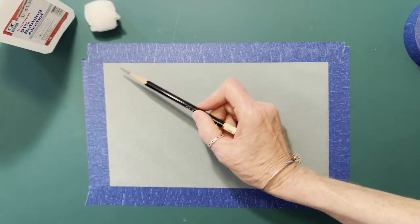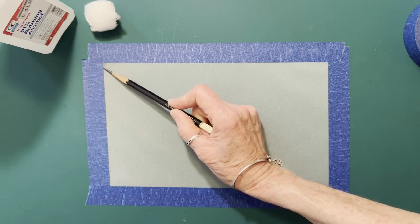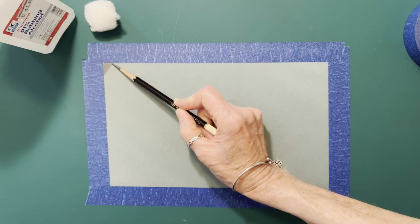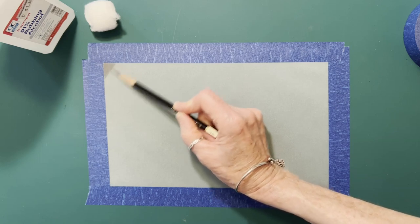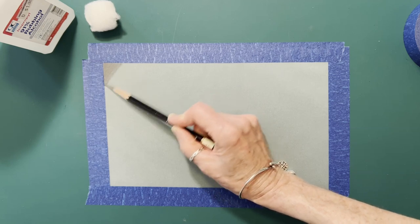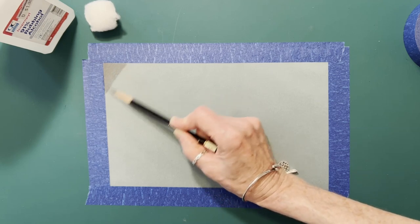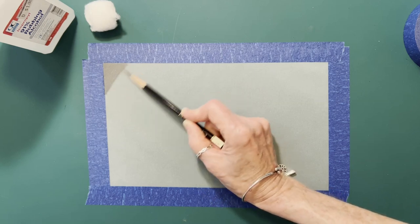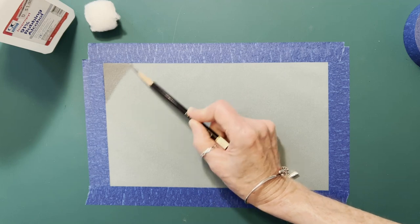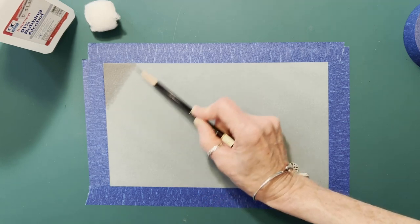Start in the corner and you're going to fill the entire page with your graphite. And I mean the entire page. Don't let white spots in between show, no white streaks, really good coverage. You want it to be solid black.